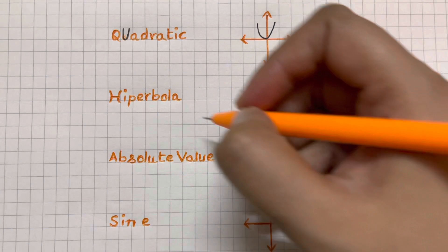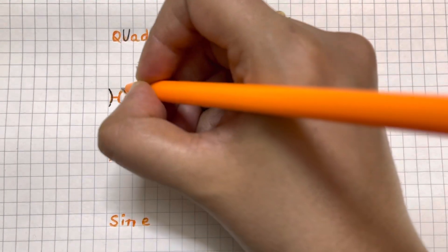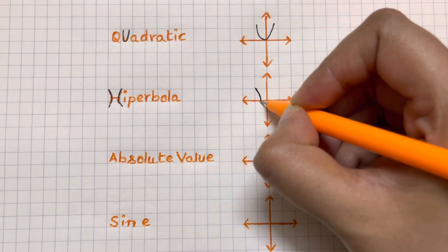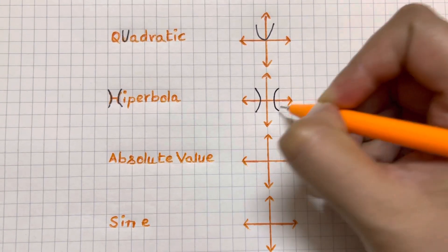And for hyperbola, it's the H which you have to remember and that's it, that's your hyperbola graph. Isn't that amazing?